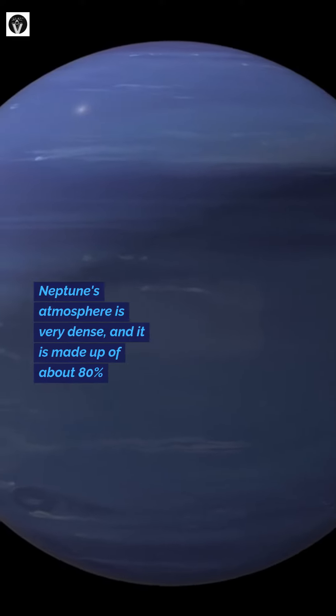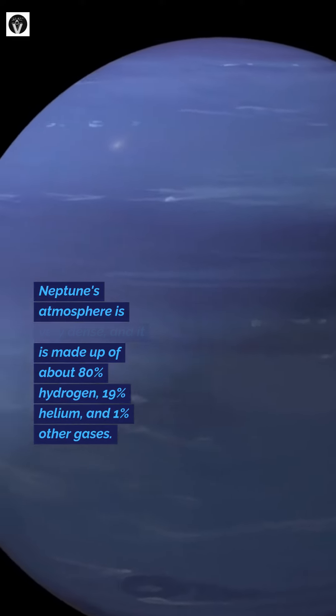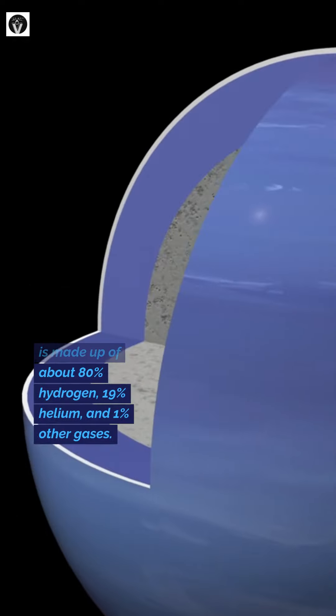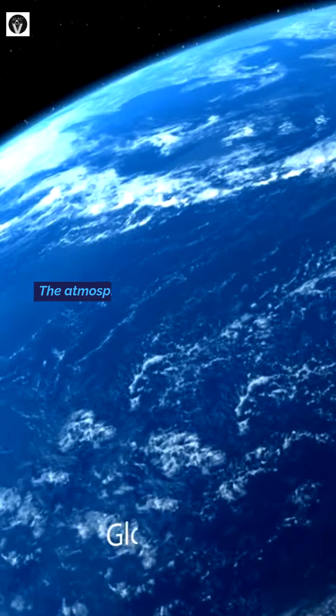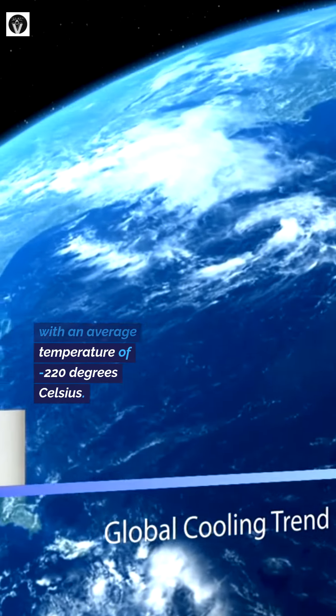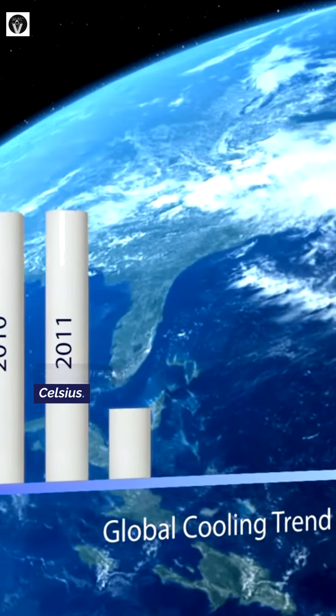Neptune's atmosphere is very dense and is made up of about 80% hydrogen, 19% helium, and 1% other gases. The atmosphere is also very cold, with an average temperature of -220 degrees Celsius.